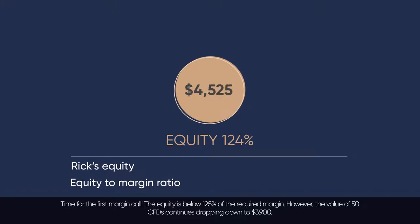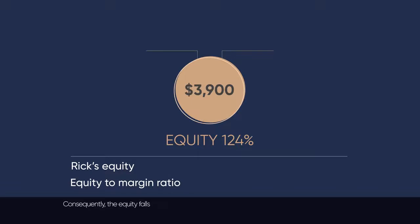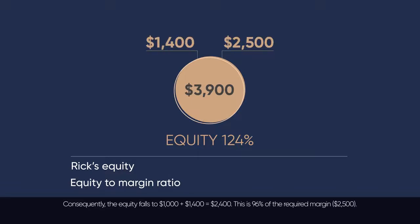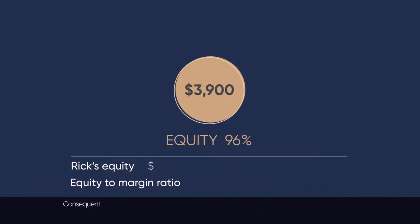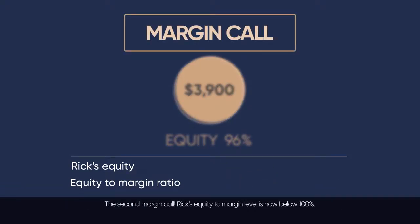However, the value of 50 CFDs continues dropping down to $3,900. Consequently, the equity falls to $1,000 plus $1,400, which equals $2,400. This is 96% of the required margin of $2,500 — the second margin call. Rick's equity-to-margin level is now below 100%.